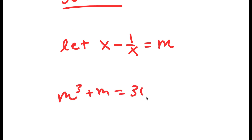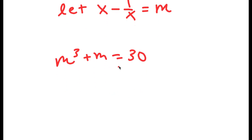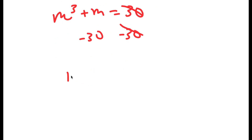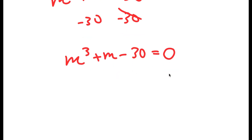So now I have m to the power of 3 plus m is equal to 30, and this is much more simple. If I subtract 30 on both sides I get m to the power of 3 plus m minus 30 is equal to 0.